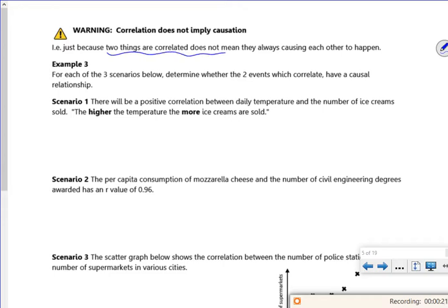Just because two things are correlated doesn't necessarily mean that they happen together. There's not an example here, but there's a correlation fact that in America there's a positive correlation between the amount of engineering degrees successfully obtained and the amount of pizzas bought. So let's have a look at this example here. For each of the three scenarios below, determine whether the two events which correlate have a causal relationship - so they are related to each other.